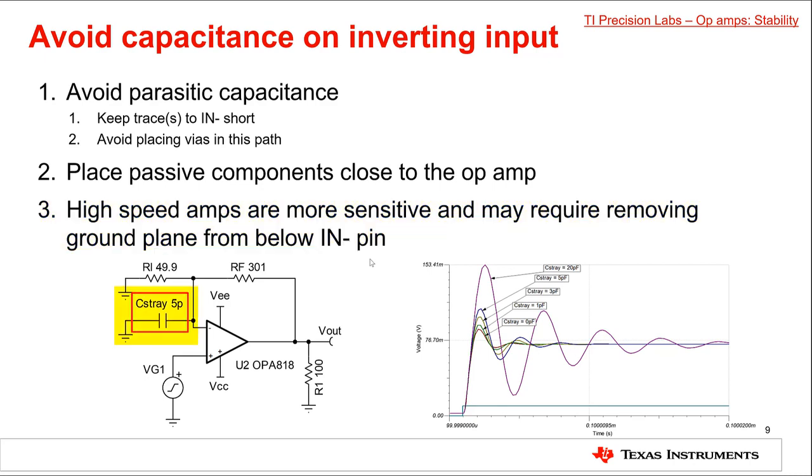On this slide, you can see how a small parasitic capacitance on the summing node can create a large overshoot response on the output. Please note, however, that the OPA 818 has a very high bandwidth, and most amplifiers will not be this sensitive. However, this is a good example to illustrate the importance of keeping this node clean.